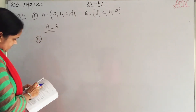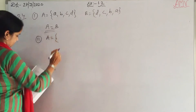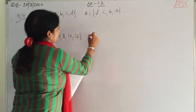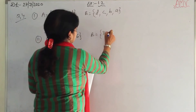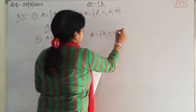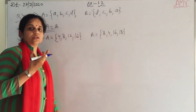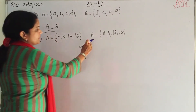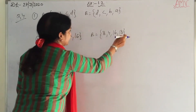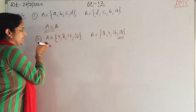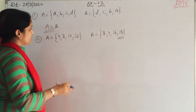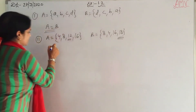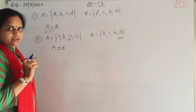Second part: A = {4, 8, 12, 16} and B = {8, 4, 16, 18}. These are not equal sets. In set A we have 4, 8, 12, and 16, but in set B it is 8, 4, 16, and 18. The element 18 is in set B but not in set A, and 12 is in set A but does not belong to set B. So A is not equal to B.